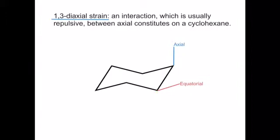So axial strain actually occurs because constituents in an axial position will be closer together than constituents in an equatorial position.